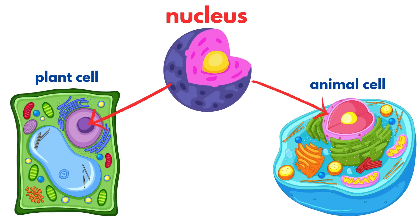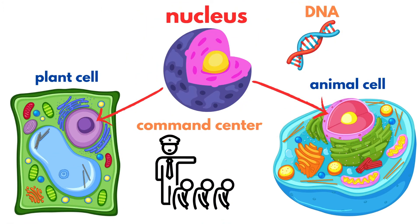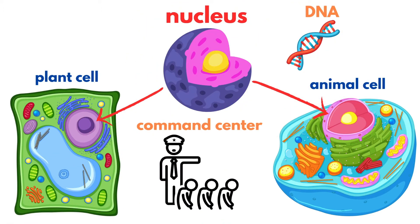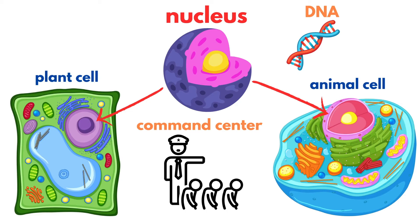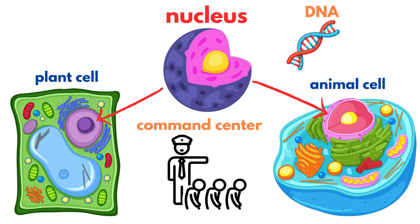First, we have the nucleus, the command center of the cell. It houses the cell's DNA, the blueprint for all cellular activities, making it essential for both plant and animal cells.